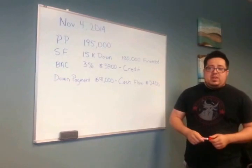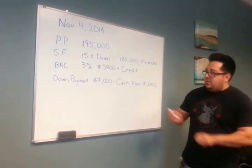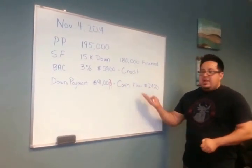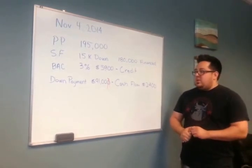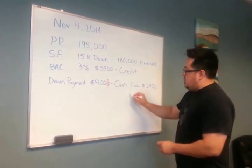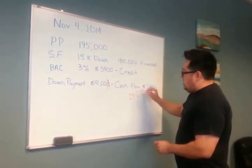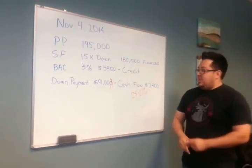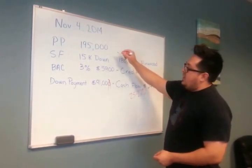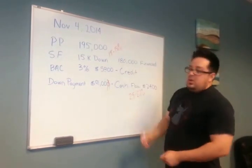He said that's great, he hadn't thought about that. So here's the example: if your down payment is $9,100 and the annual cash flow is $2,400, the cash-on-cash return is around 25% to 27%. If he had put $15,000 down with the same $2,400 cash flow, his return would only be about 15% to 18%. Obviously the lower down payment scenario is better.